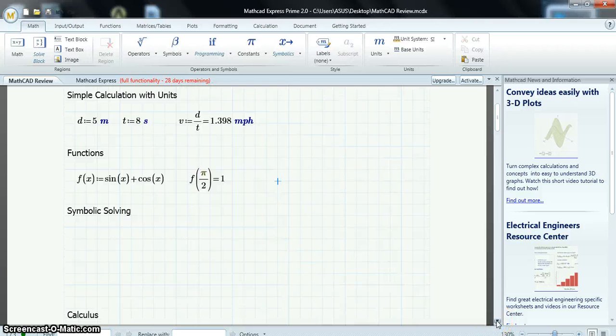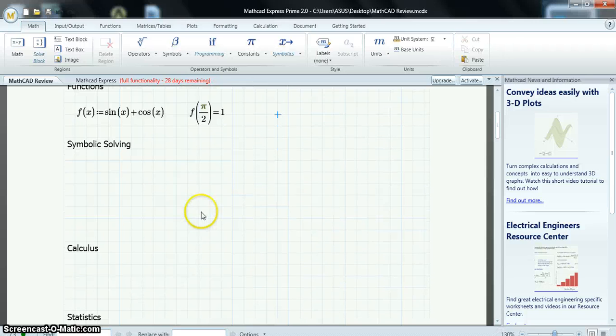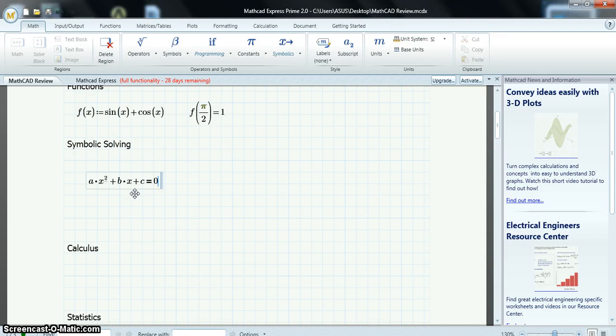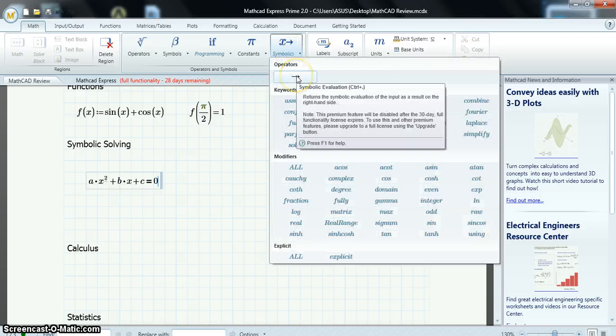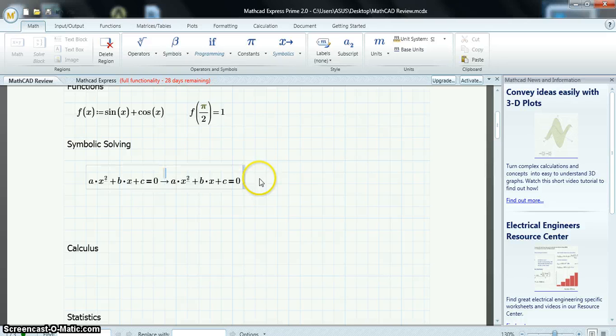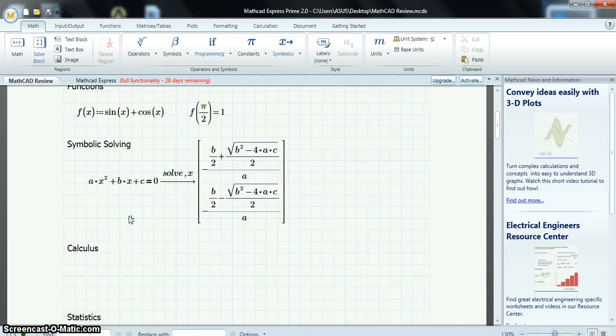Now, symbolic solving. I'll choose a classic example, the quadratic equation. So, that's A, X squared, plus B, times X, plus C, control, equal, 0. And then I'll go up to Symbolics. I will use the Symbolic Evaluation, and I will solve for X. Click off, and there's the answer.